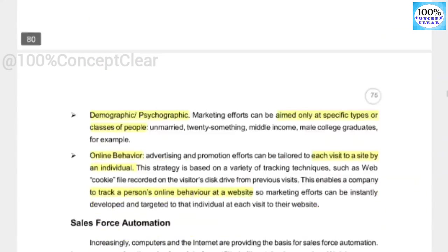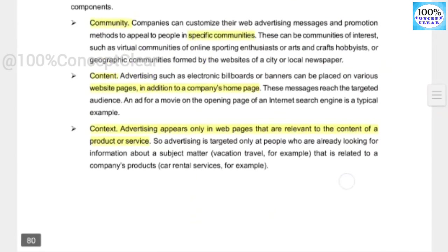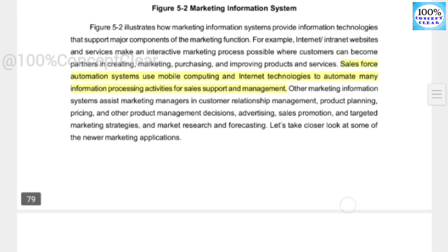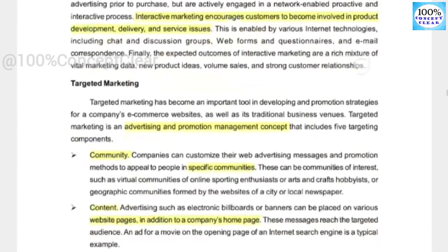Next in the marketing information system is salesforce automation. We use mobile and internet technologies to automate many information processing activities for sales support and management. In the salesforce automation system, mobile and internet technologies automate all information processing activities, which is why sales are better supported.